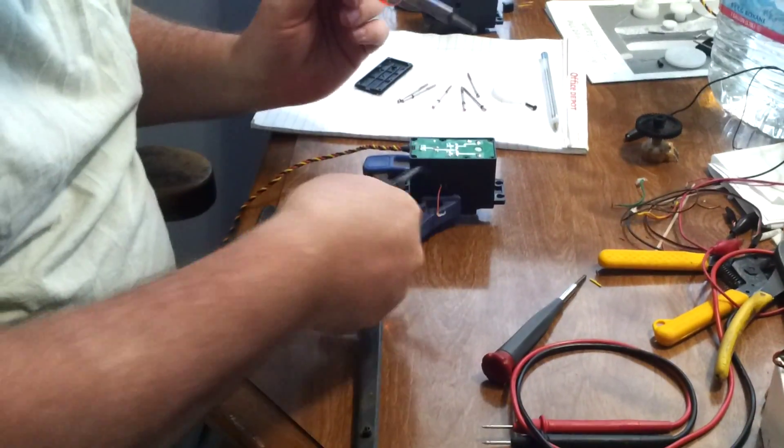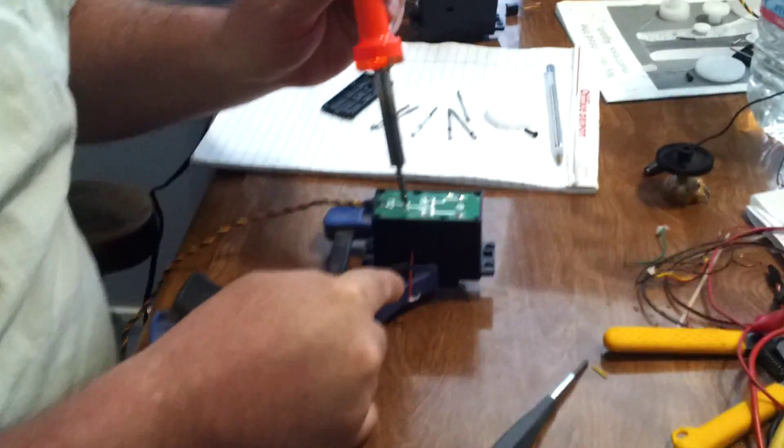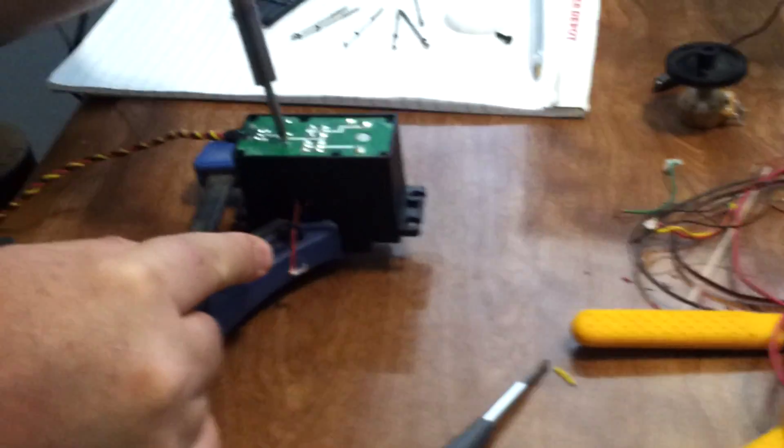Take your soldering iron, grab your wire. You want to kind of pull on your wire while you heat up the solder and melt it.